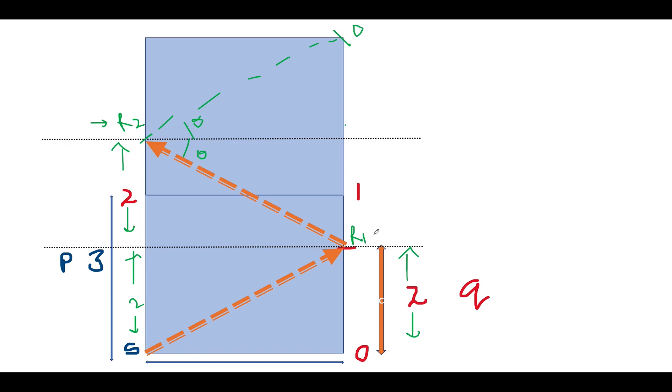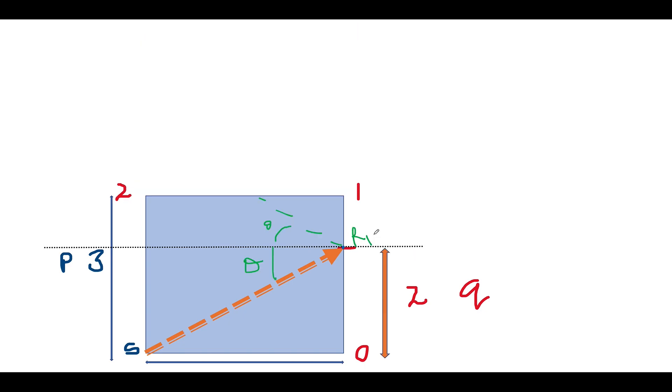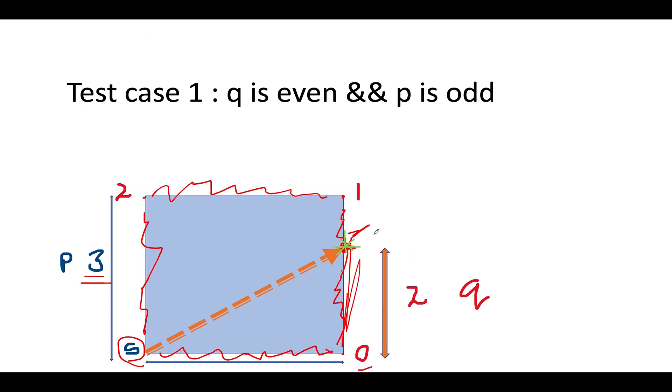If you carefully observe, then you will realize that whenever the final terminal value of q happens to be even and final terminal value of p happens to be odd, then we can see that the convergence point or the receptor at which the ray of light would finally converge would be equal to zero. So you can draw a few more guesses, you can take the value of q as four, the value of p as six, and you can draw a few more permutations as well. With respect to the terminal value, I'll explain it in the coding section. So don't worry.